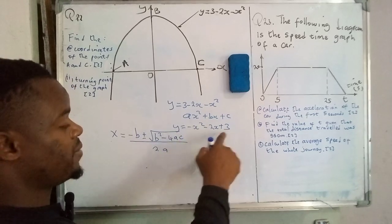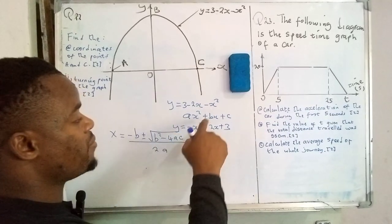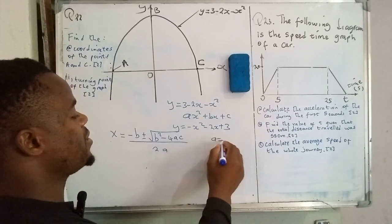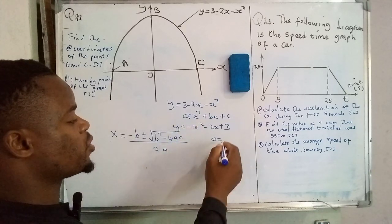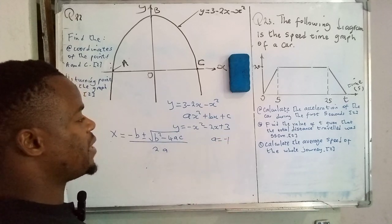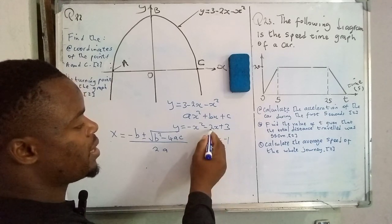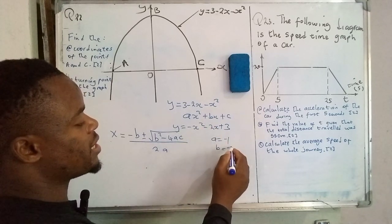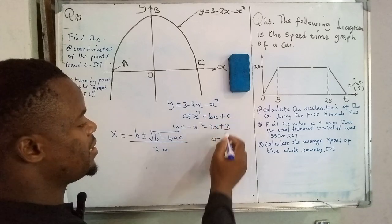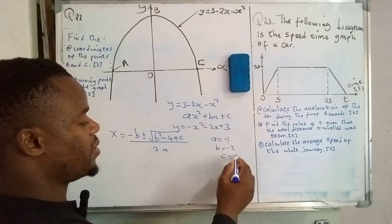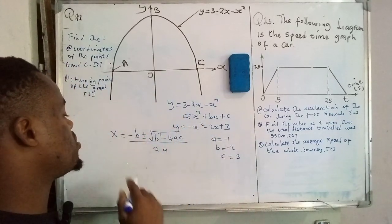From this function we need to identify a, b, and c. The coefficient of the first term is actually negative 1, so a = −1. Then b is equal to −2 — the coefficient of the x term. Don't forget to consider the signs; they are very important. Then c is actually 3.